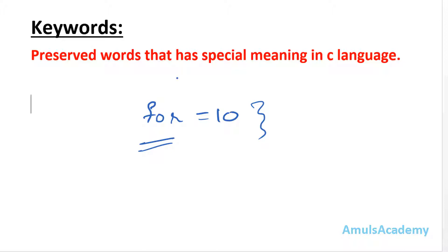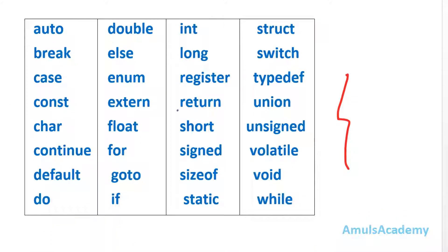And in C all the keywords are written in lowercase letter. So I will show you the 32 keywords, here we can see all the words are in the lowercase letter.